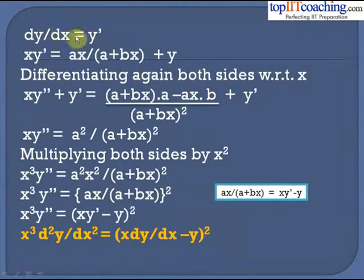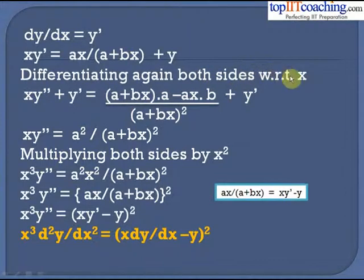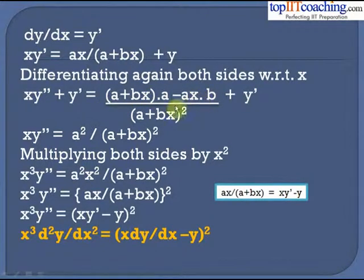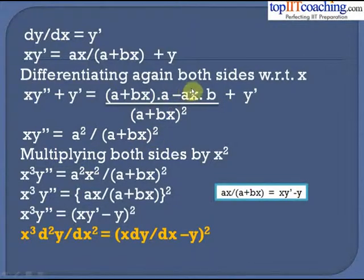Let dy/dx = y'. We have x·y' = ax/(a+bx) + y. Differentiating both sides again with respect to x: x·y'' + y' = a[(a+bx) − ax·b]/(a+bx)² + y'. The y' terms cancel, giving x·y'' = a²/(a+bx)².